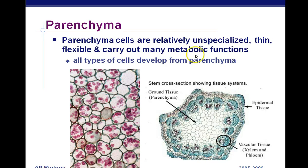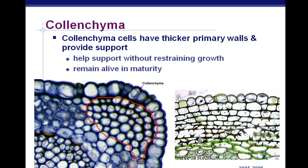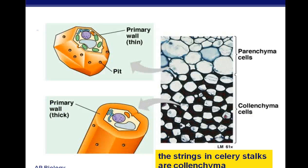Parenchyma cells are relatively unspecialized; here we have a lot of parenchyma in the middle of the plant. Collenchyma has uneven thickness — thick in some areas and thinner in others — and the cells are alive at maturity, providing support. You can think of collenchyma as the stringy stuff in celery. In fact, celery starts with a C and collenchyma starts with a C — the strings of celery stalks are collenchyma.